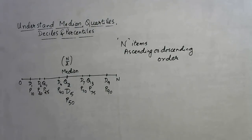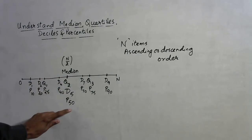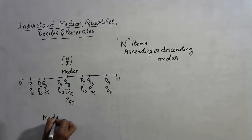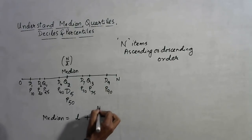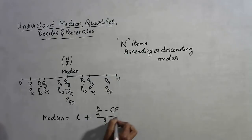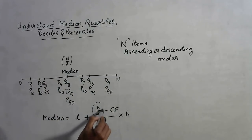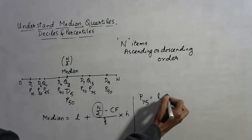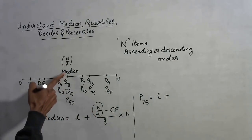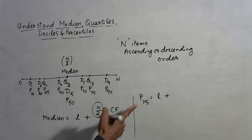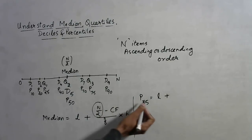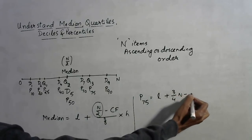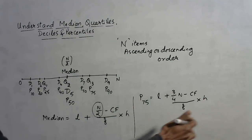Now we have related the median with quartiles, deciles, and percentiles. If the formula for median is: L + (n/2 − cf) / f × h, then for all other measures we just need to change the first part. For P75 or Q3, since 75% of n is 3n/4, we replace n/2 with 3n/4. The remaining parts of the formula stay exactly the same.